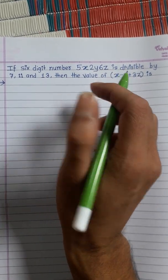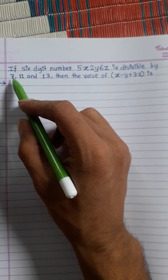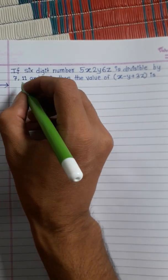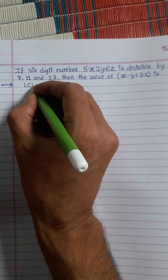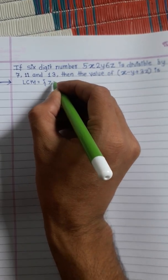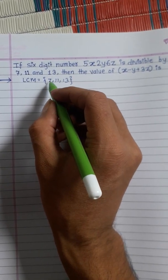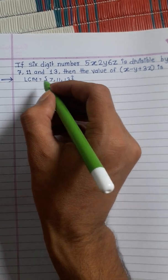We want to find the values of x, y, and z. The number should be divisible by 7, 11, and 13, which means it will be divisible by the LCM of 7, 11, and 13. As we know, all three are prime numbers.